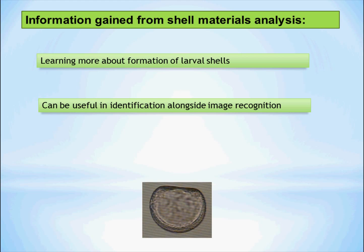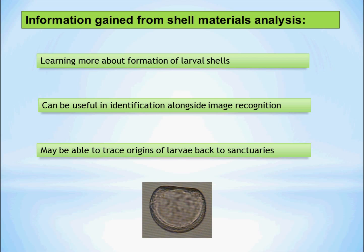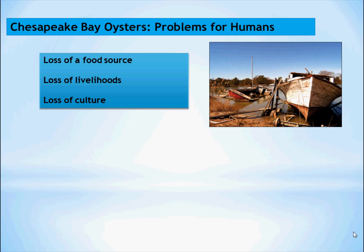It can also be useful in identification alongside the image recognition technique. And if pigment patterns are specific to the location the larvae are spawned in, we may be able to trace origins of larvae back to sanctuaries.